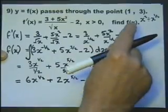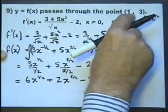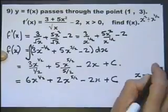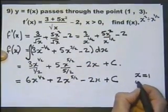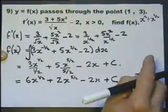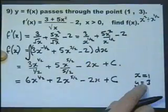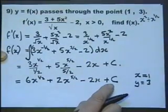Now, because we're told that it passes through this point, in other words, we're told that when x equals 1, y equals 3. Because we're told that piece of information, we can actually work out this value of c.